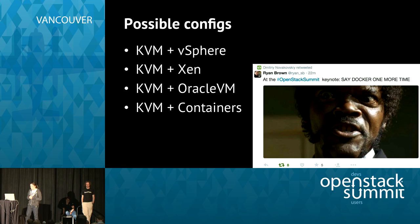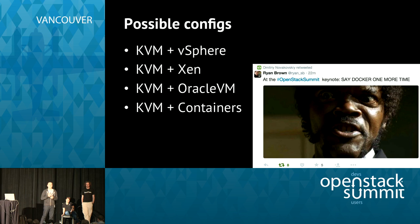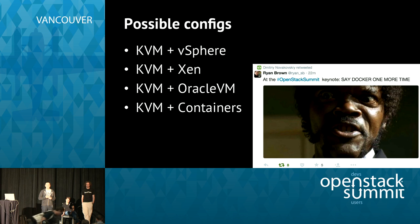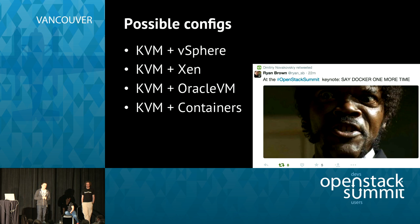KVM plus Xen: over the last year and a half at Mirantis, I've seen one customer discussing this configuration. They had workloads optimized for Xen and were leveraging PCI pass-through using Xen hypervisors — passing cores from NVIDIA K2 directly into a VM for 3D rendering. We discussed KVM plus Xen but ended up doing two separate clouds because Xen was tricky to combine with Neutron. We had a separate cloud with Neutron plus KVM and a separate cloud with Xen plus Nova Network. KVM plus Oracle VM is also seen in the field.